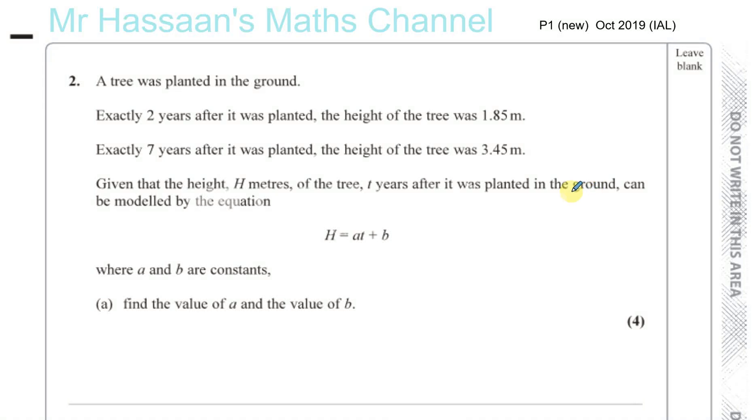And now for October 2019 International A Level P1, question number two. A tree was planted in the ground. Exactly two years after it was planted, the height of the tree was 1.85 meters. Exactly seven years after it was planted, the height of the tree was 3.45 meters. Given that the height H meters of the tree, t years after it was planted in the ground, can be modeled by the equation H = at + b, where a and b are constants, find the value of a and the value of b.